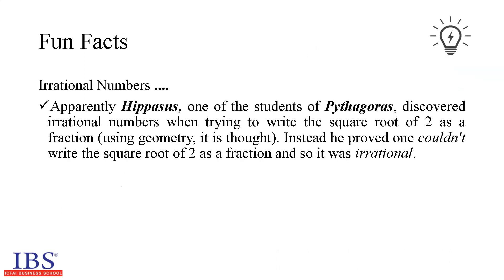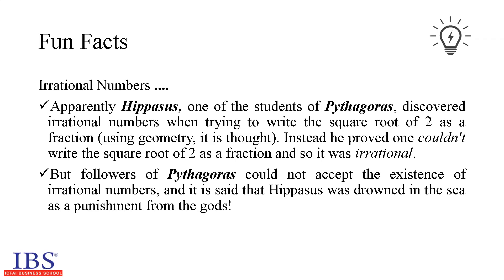Let us look at some fun facts about the history of irrational numbers. Apparently, Hippas, one of the students of mathematician Pythagoras, discovered irrational numbers when trying to write the square root of 2 as a fraction using geometry. Instead, he proved that one couldn't write the square root of 2 as a fraction, and so it was irrational. But followers of Pythagoras could not accept the existence of irrational numbers, and it is said that Hippas was drowned in the sea as a punishment from the gods.